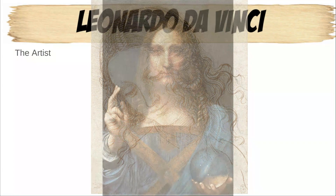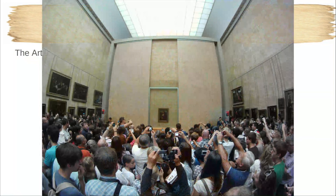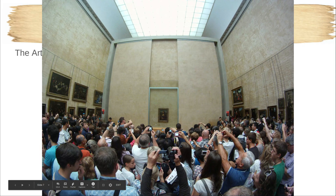Another picture that Leonardo drew — we just saw this painting. You can see in the middle of this picture this is the Mona Lisa, and it is in a museum called the Louvre, which is in Paris, France. It looks like a big pyramid.